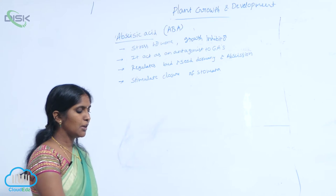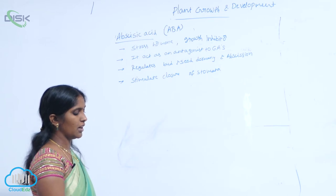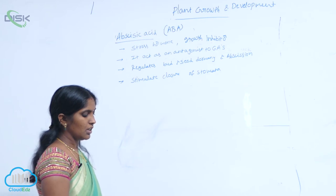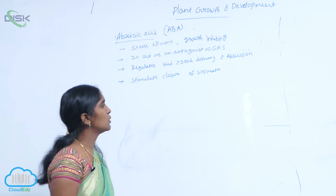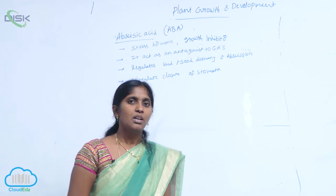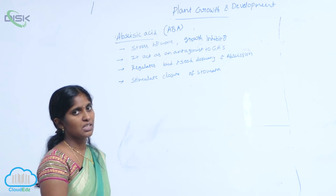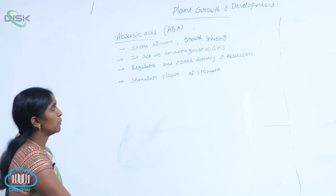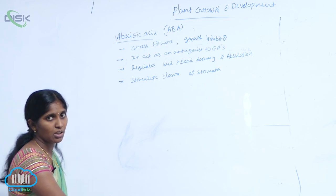ABA helps seeds to withstand desiccation and other factors unfavorable for growth. In this situation ABA acts as an antagonist to gibberellic acid. It is a stress hormone — the concentration of ABA increases in stress conditions, promoting the closing of stomata to avoid transpiration and water loss.